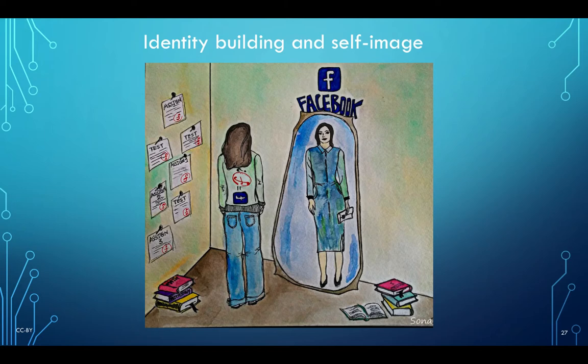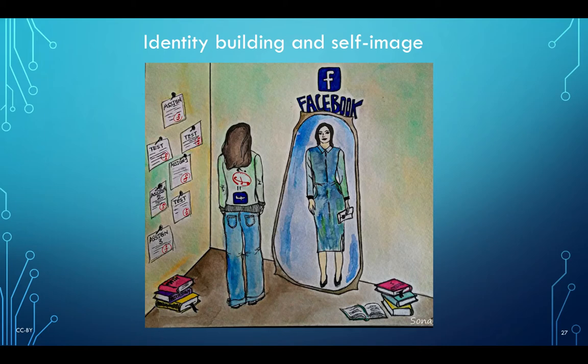Here we have a drawing about identity building and self-image: a woman is looking into a mirror, and the mirror is Facebook. On the wall you can see she has taken tests but has only F's — only fails — and she is trying to be someone that exists only on Facebook. Her reflection is what she does and sees on Facebook. Academic research has shown that youth who go on Facebook have a distorted image of themselves and their peers, striving to be perfect like their peers when in reality their peers are not perfect.